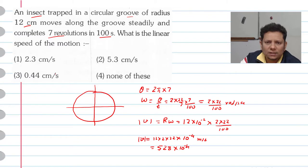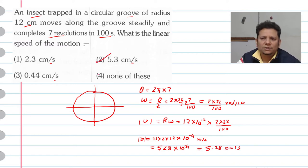The answer is 5.28 cm per second. The closest answer is 5.3, so based on this we can say option number 2 is the right answer.